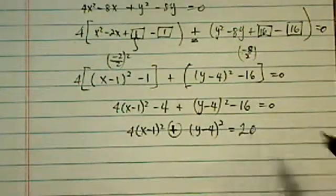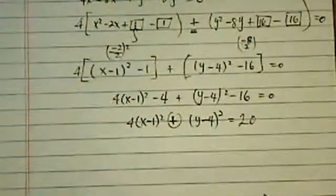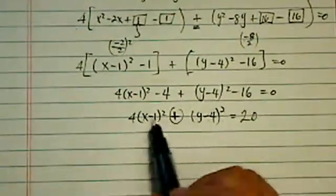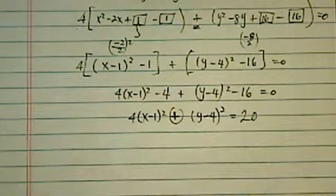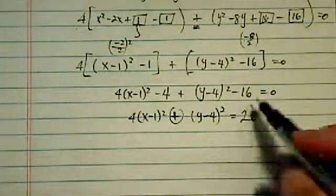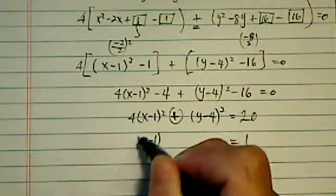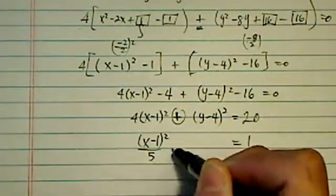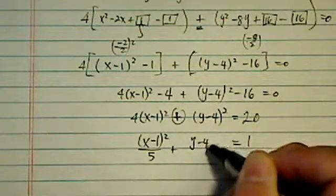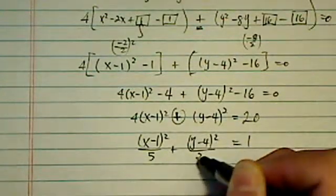So I have a positive 20 over there. Now, because the x², y² have different size, we need to normalize it. So divided by 20. So I have (x - 1)² divided by 5 here plus (y - 4)² divided by 20.